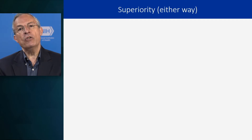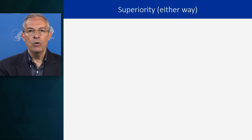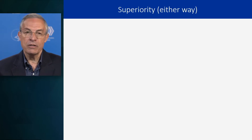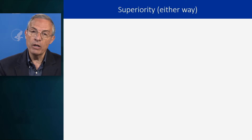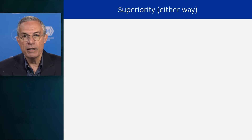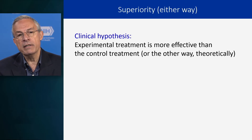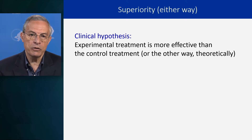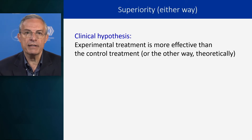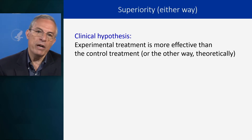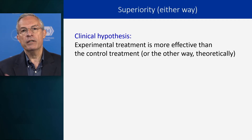Superiority. When we talk about superiority, we really mean going either way. Even if you're talking about medication and placebo, we call it two-sided — it's superiority and it's two-sided. It's possible that the medication would be better than placebo, or we allow the placebo to be better than medication. The clinical hypothesis is that the experimental treatment is more effective than the control treatment, or the other way theoretically. But we're hoping that the experimental is going to be more effective. When would we do a superiority trial? That is when we want to find that the new medication is better than placebo or better than treatment as usual.